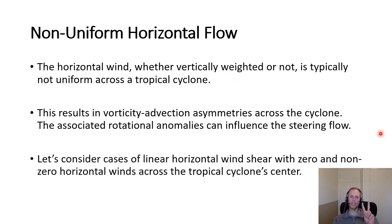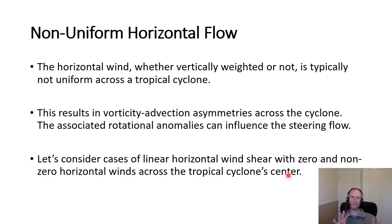We'll consider two cases: one with linear horizontal wind shear and no wind at the center, and one where there is a non-zero wind right across the center. We'll also take a step further and look at what happens when we add back the beta effect — starting simply with the non-uniformity of horizontal flow, neglecting the beta effect, then returning to consider it in that context.